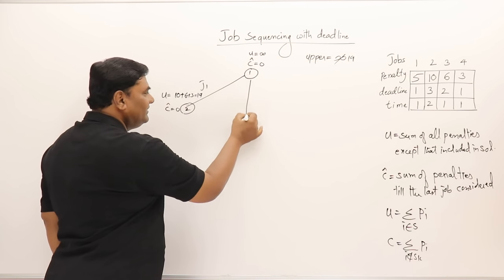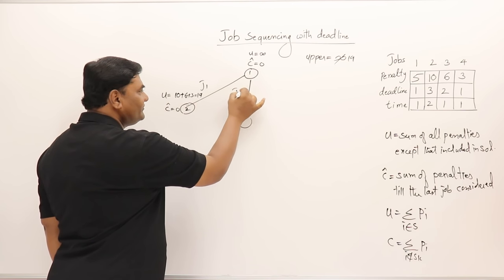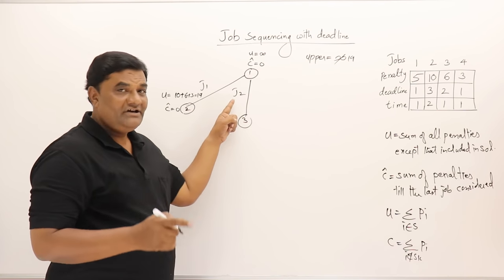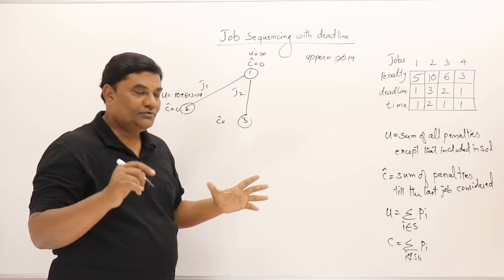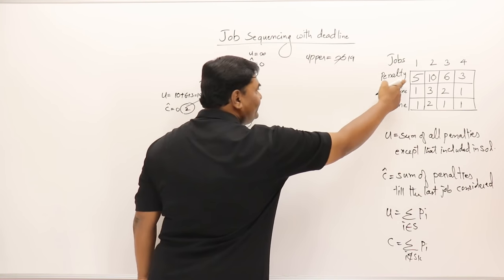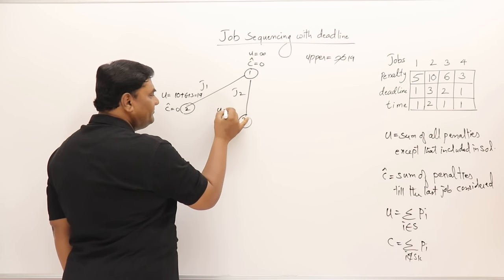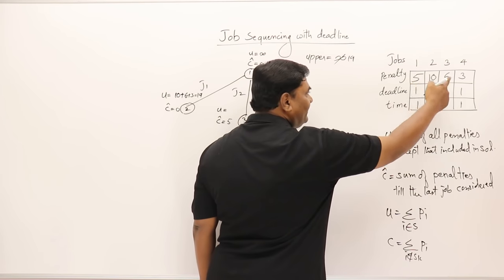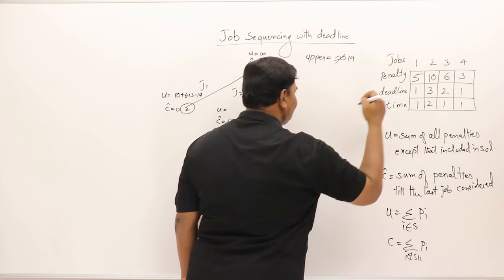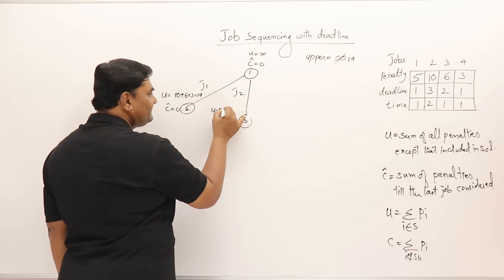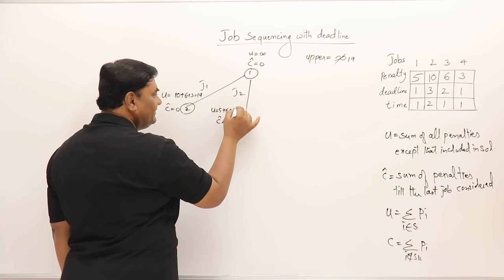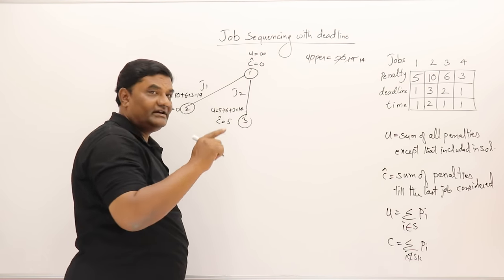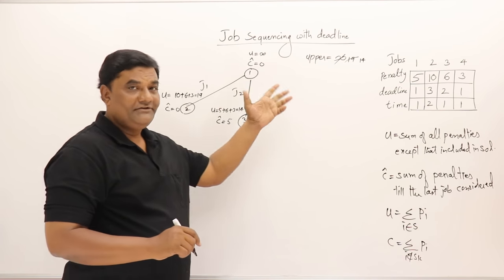Next, the third node considers job two only, meaning first job is not done, so its penalty of 5 is the cost. The upper bound is 5 + 6 + 3 = 14 (penalties of all jobs except job two). We update upper to 14 since it is smaller. If we ever get a new upper bound smaller than the current one, we update it.